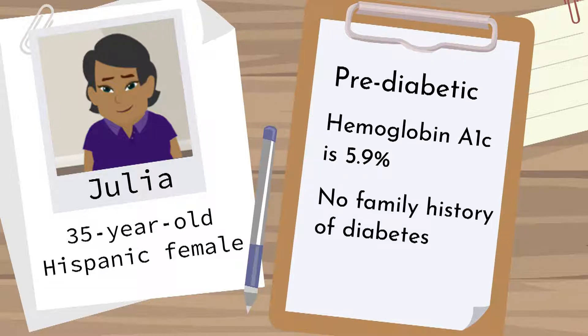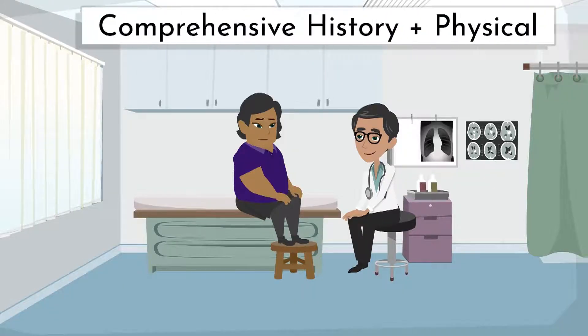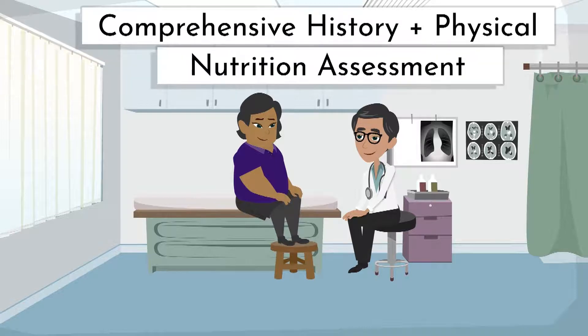Julia doesn't understand why this would be since she does not have a family history of diabetes. This patient requires a comprehensive history and physical, which should always include a nutrition assessment.